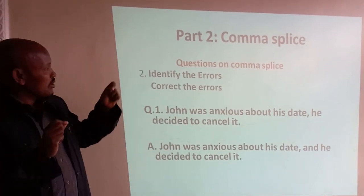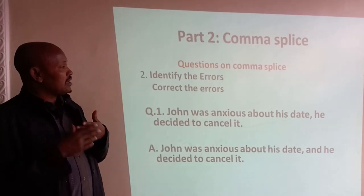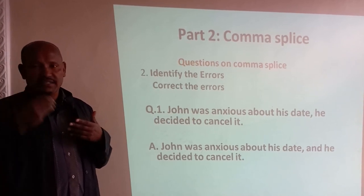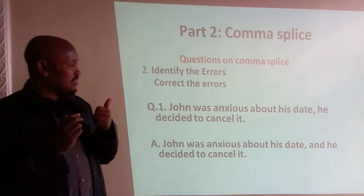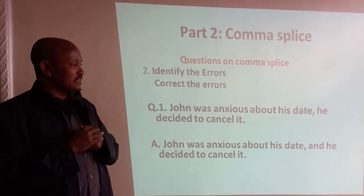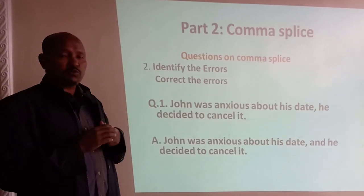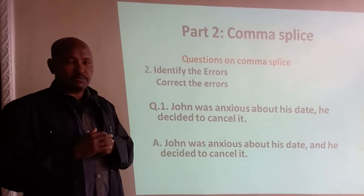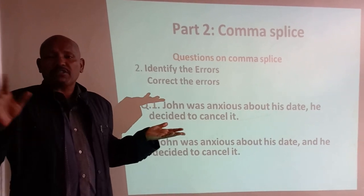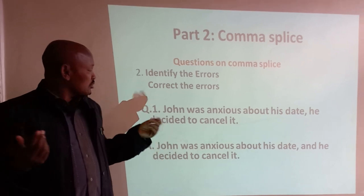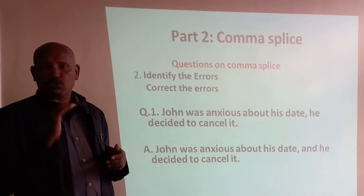From this point, we are going to deal with some questions regarding comma splice. The first task is to identify the kind of errors and how we can correct them. Let's look at the first example: 'John was anxious about his death, he decided to cancel it.' Here we have two main clauses separated by only a comma, which is wrong. Instead of using just a comma, we should use a different punctuation mark to make the sentence meaningful.